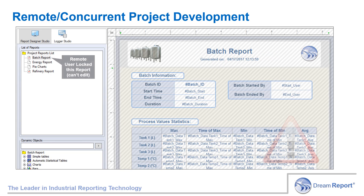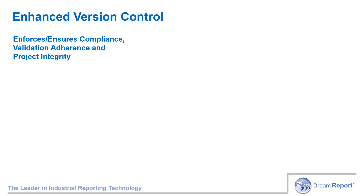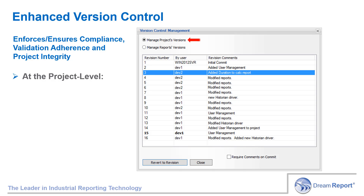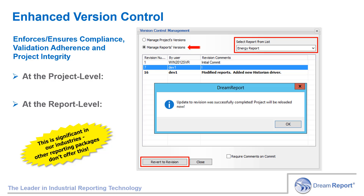Note that a red dot on the report indicates that the report is locked by another user, and the report appears grayed out for editing. Once the user is ready to commit their changes to the main project repository, they can do so at the individual module or report level, or all at once. A comment will be required when committing, which will be associated with the version control. The enhanced version control enforces and ensures compliance, adherence to validation requirements, and project integrity. At the project level, you can review comments by user for each modification or version, and roll back to that version if needed. Or at the report level, review comments associated with individual reports and roll back to a specific version of that report if needed. Of course, this functionality is significant in many of the industries we serve.